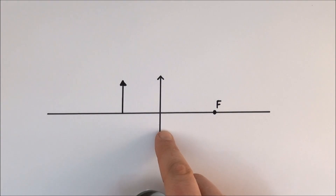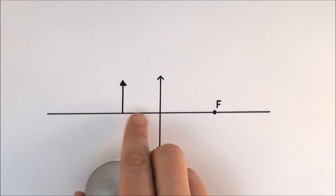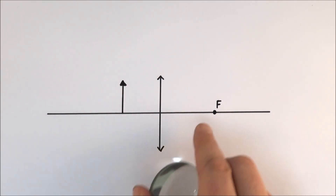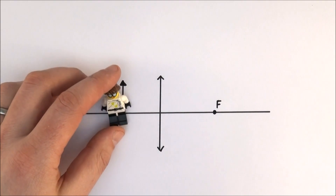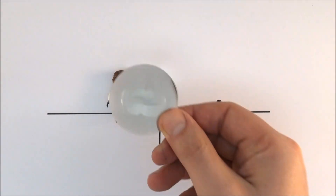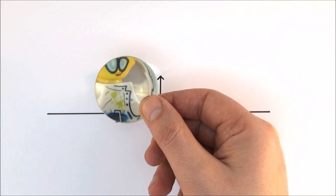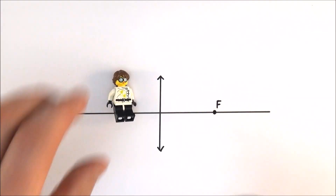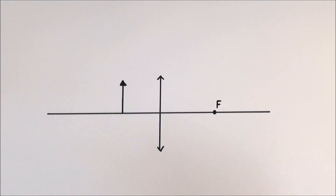Here we have a converging lens and an object which is closer than the focal length. This is basically where you have something like a magnifying glass held quite close to an object, and what we then see is a magnified image. This is how to draw the ray diagrams to actually construct that image that we see.